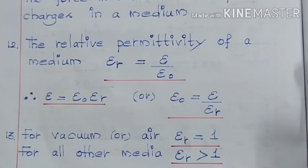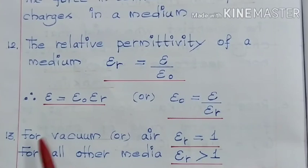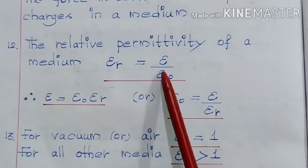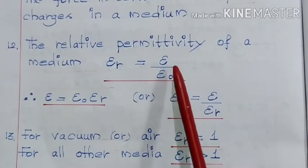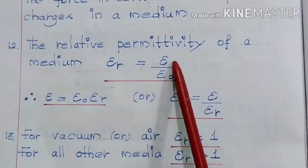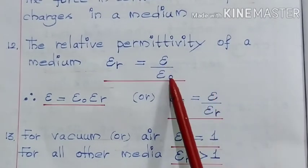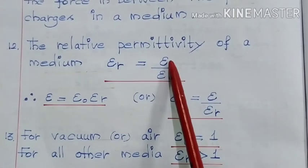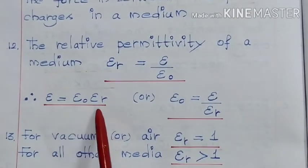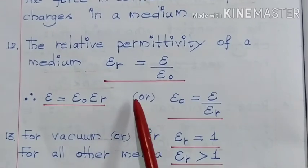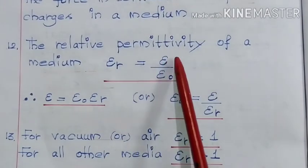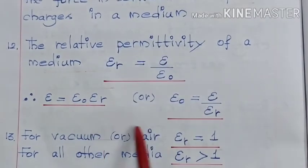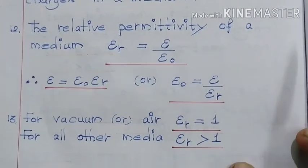Next point, the relative permittivity of a medium, that is, εᵣ = ε/ε₀, which is nothing but the permittivity of a medium divided by the permittivity of free space. So, from this expression we get, ε = ε₀εᵣ, or ε₀ = ε/εᵣ. So, from this we get two other variations of these expressions.